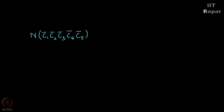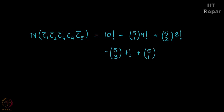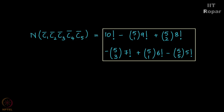Now what is the final answer? Using inclusion-exclusion, N(C1̄ ∩ C2̄ ∩ C3̄ ∩ C4̄ ∩ C5̄) equals 10! minus C(5,1)·9! plus C(5,2)·8! minus C(5,3)·7! plus C(5,4)·6! minus C(5,5)·5!. So in this many ways the integers 1 to 10 can be arranged such that no even integer is in its original position.